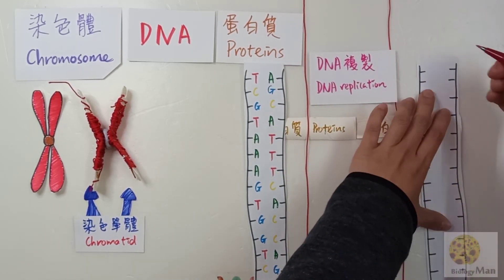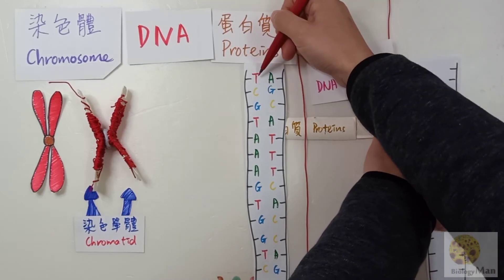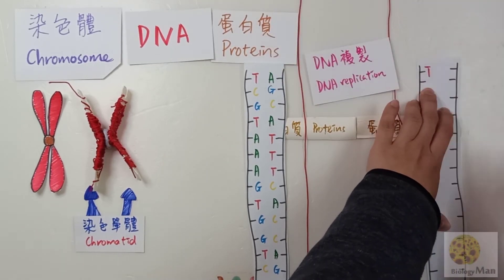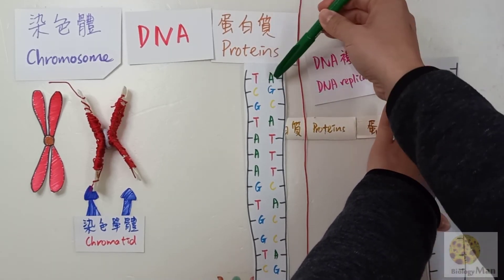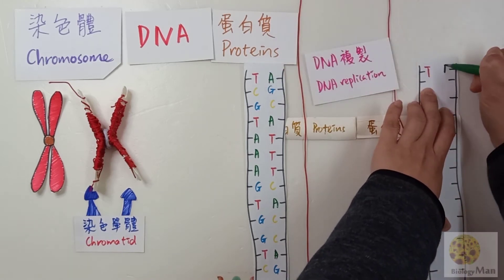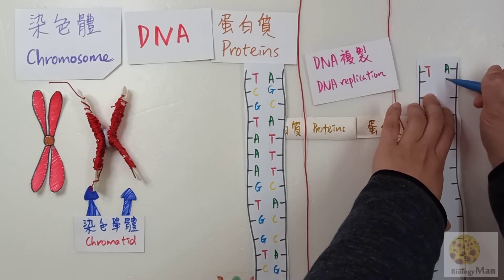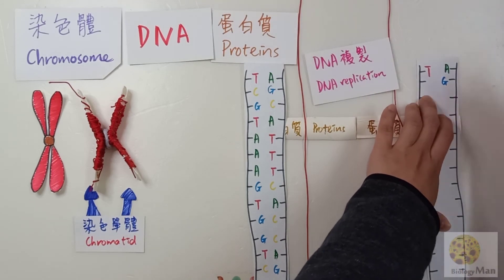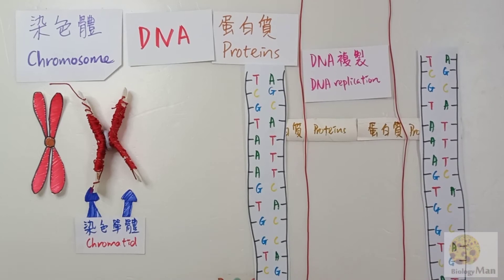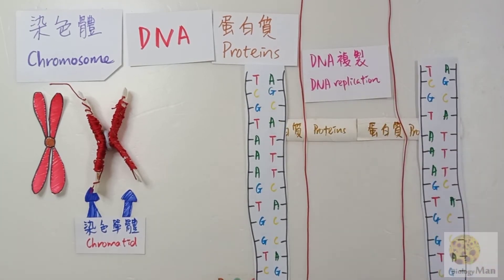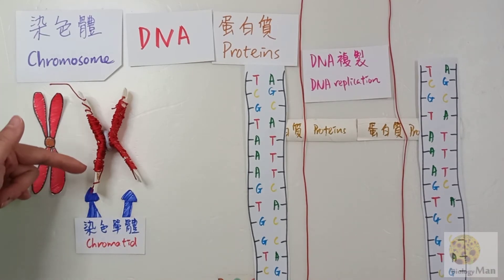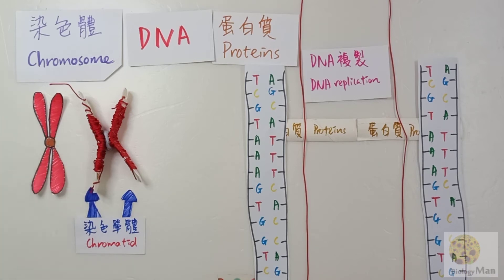It is very important to know that these two DNAs are actually formed by DNA replication, so the genetic material inside is identical. That means the nucleotide sequence in this DNA will be exactly the same as the other one. So if one is T then the other must be T; if one is A then the other must be A; if one is G then the other must be G. Therefore, the genetic material in these two chromatids is exactly identical.